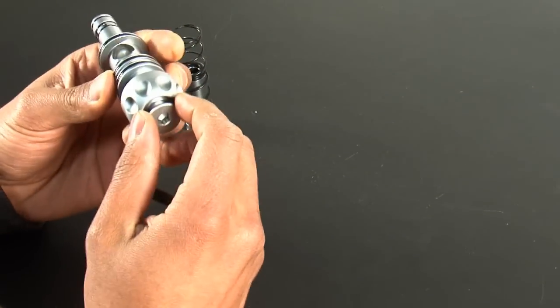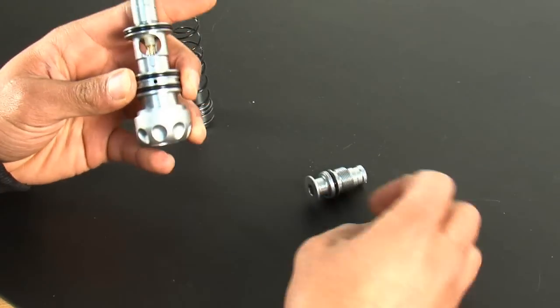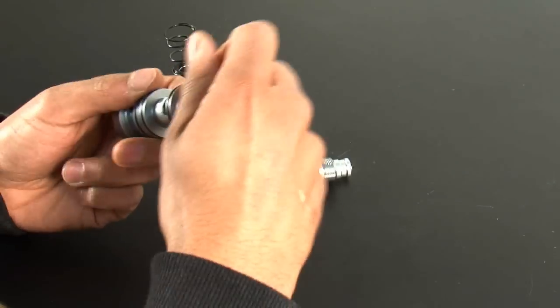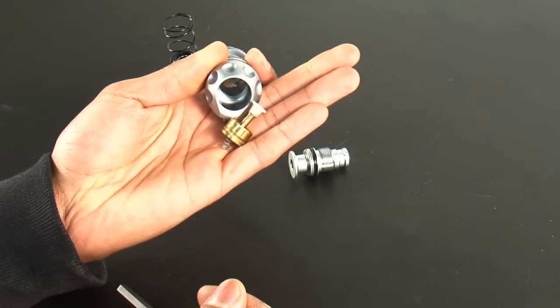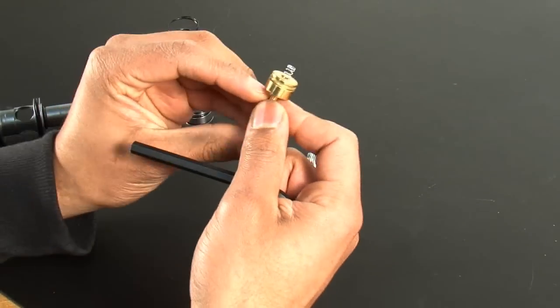To get it out, you're going to unscrew your back cap like this, take off your back cap, and push the poppet out through the back of the bolt guide. So now you have your poppet assembly here.